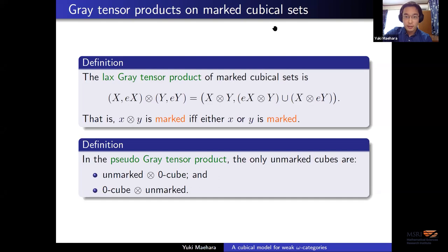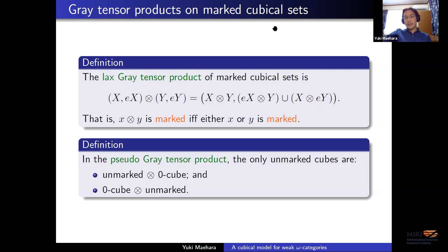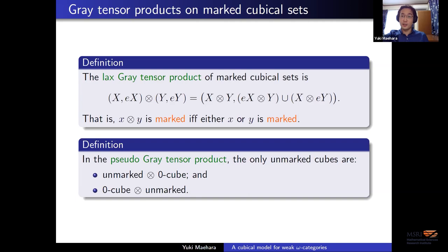Does the pseudo Gray tensor product agree with the Cartesian product? No. The Cartesian product is not the right thing here because we don't have enough maps in the cube category. Should we expect the pseudo Gray tensor product and the Cartesian product to agree up to weak equivalence? When you use cubical sets with connections to model infinity groupoids, the Cartesian product is homotopically well-behaved. Certainly they're not isomorphic as cubical sets, but perhaps one could expect them to be weakly equivalent.